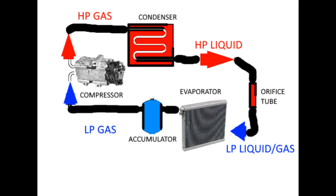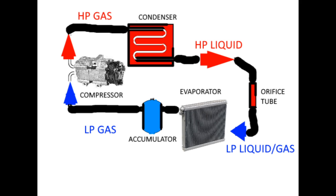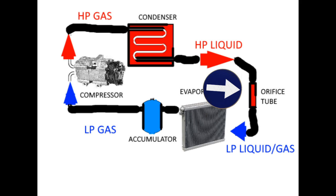Whether you have a Peterbilt, Freightliner, a bus, or a car, pretty much all systems are the same. The first component is your AC compressor. Then the refrigerant enters the condenser, which is similar to a small radiator. Then it travels to some sort of restriction — in this setup, an orifice tube. Then it moves to your evaporator, and then to an accumulator. Not all systems have accumulators — some have a receiver dryer — but the principles are pretty much all the same.